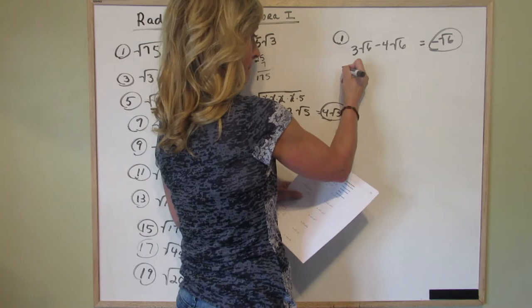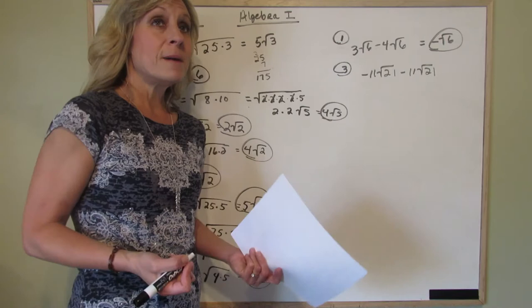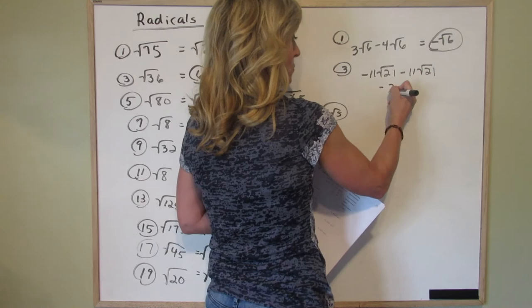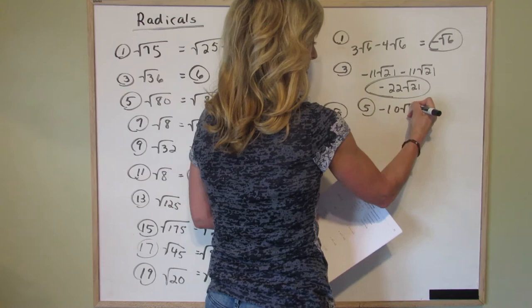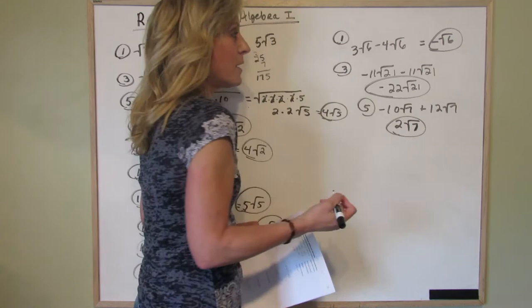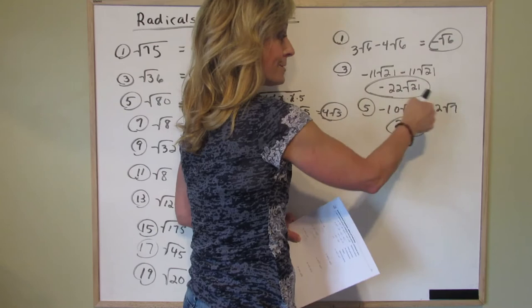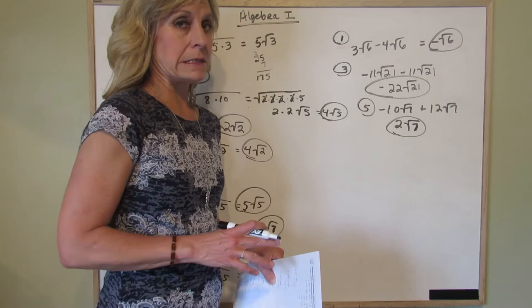Number 3, we have negative 11 square roots of 21 minus 11 square roots of 21. Well, if you had minus 11x minus 11x you'd have minus 22x. So this is going to be minus 22 square roots of 21. Moving right along. Number 5, negative 10 square roots of 7 plus 12 square roots of 7. Minus 10 plus 12, that's 2, and it's the square root of 7. Now I'm just going to pause and make a note here that these radicals are the same. It's the same root, they're all square roots, and it's the same number. 6, 6, 21, 21, 7, 7. If they were not the same in either of those instances, you would not be able to do this process. So keep that in mind.